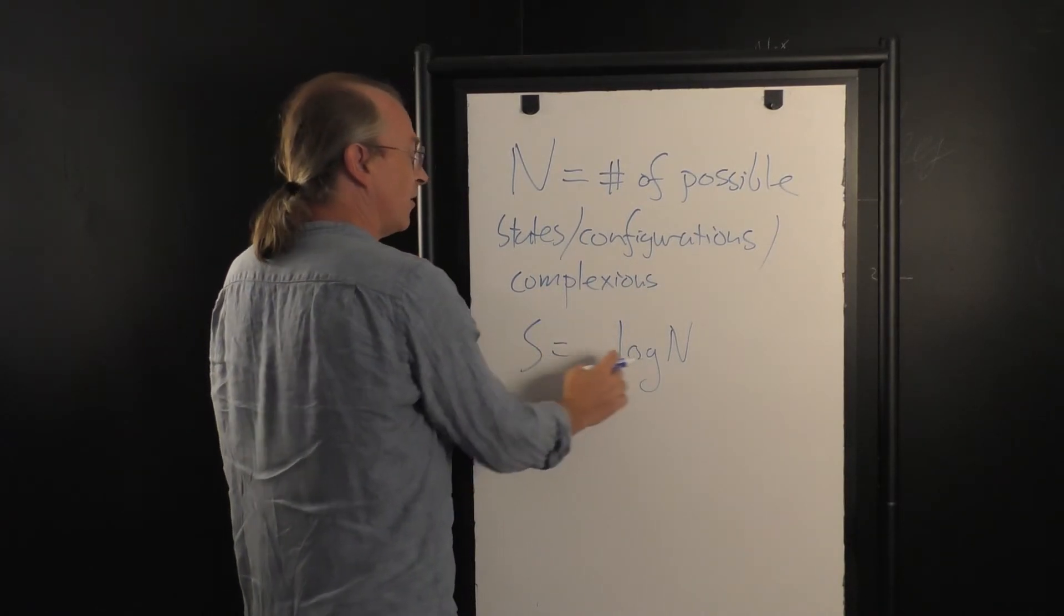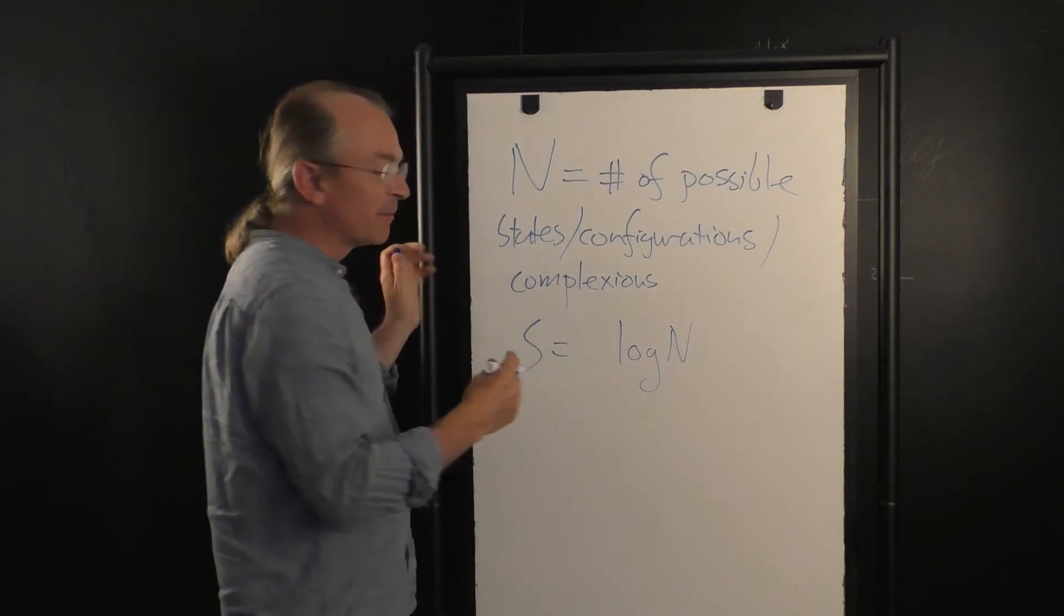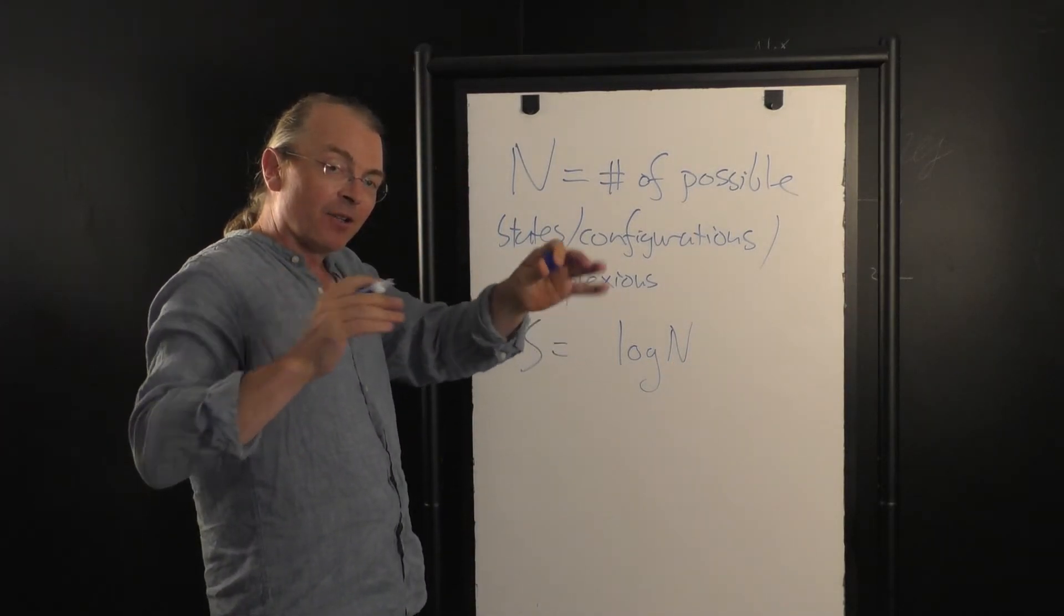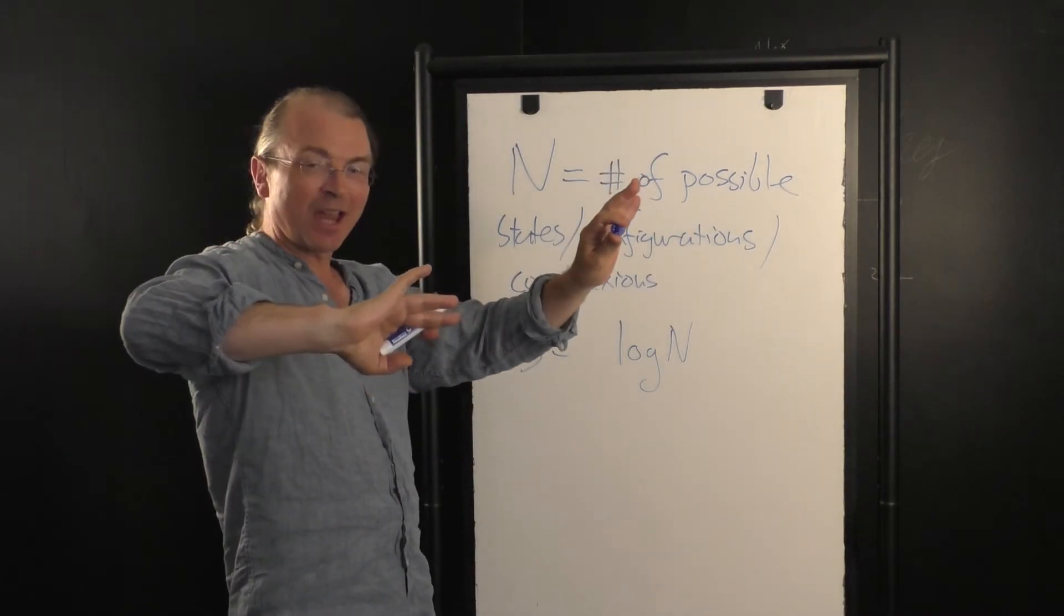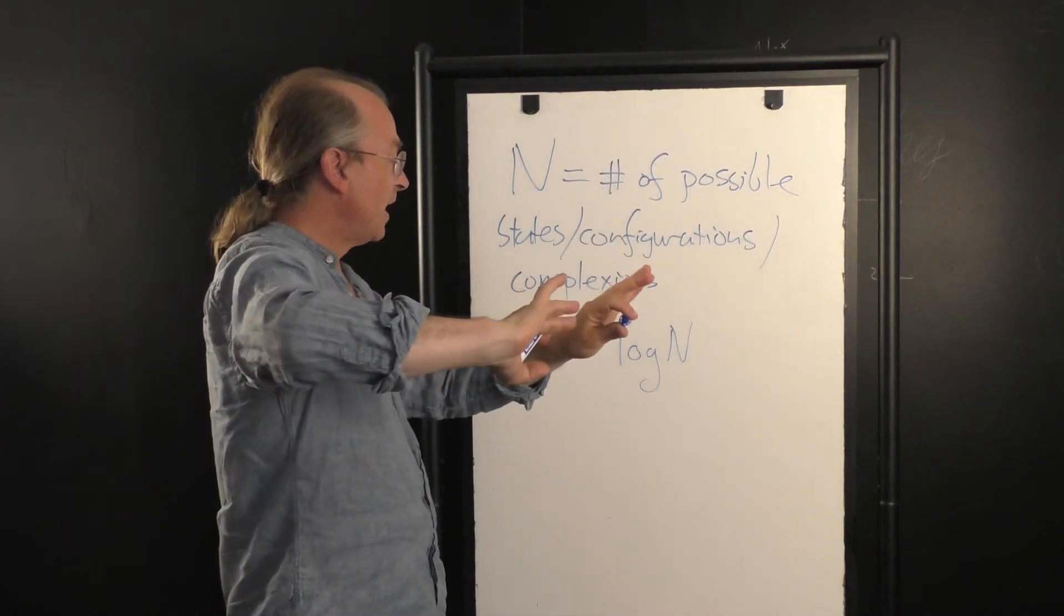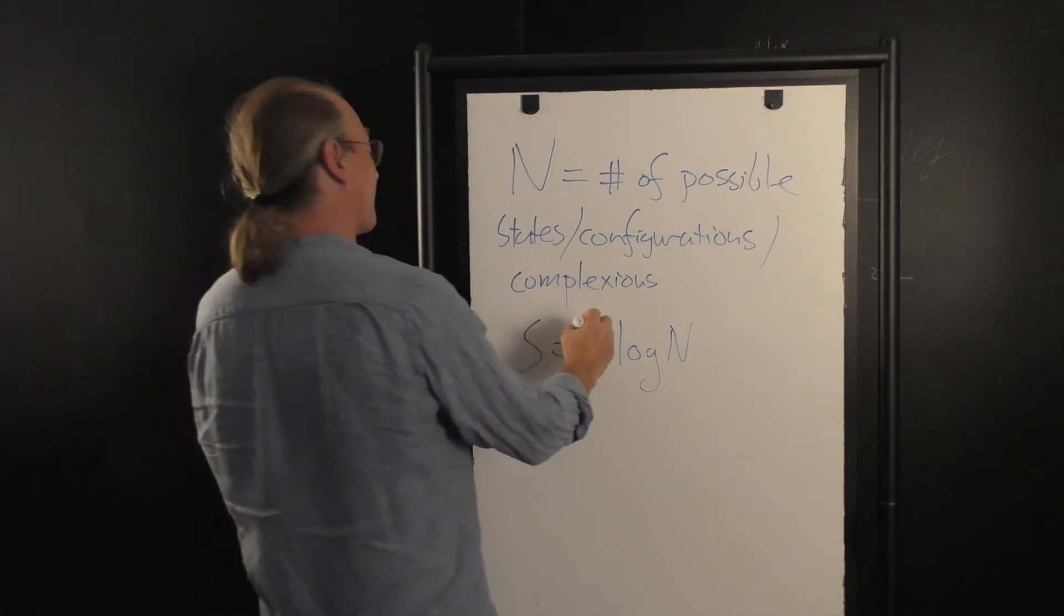This quantity right here, the log of N, is the number of bits that's required to label each of the possible different complexions, or states of the molecules in the gas. And they said, if we define S to be proportional to this, they defined a constant K,